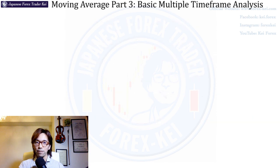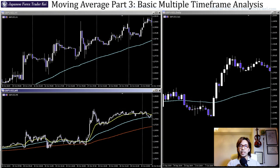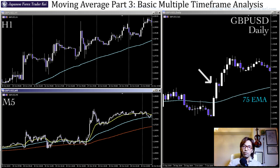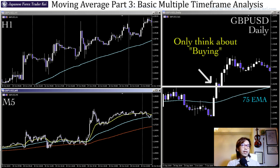Let me give you an example from a real chart. This is the Pound Dollar in daily, 1-hour, and 5-minute timeframes. If you look at the daily first, look at the momentum right here — this blue line is EMA, exponential moving average at 75 period. The market broke the recent high here, gold-crossed the 75 EMA, and you can see it's in a bull trend. So when I see the market like this, I only think about buying, never think of selling it, whatever lower timeframes I look at.